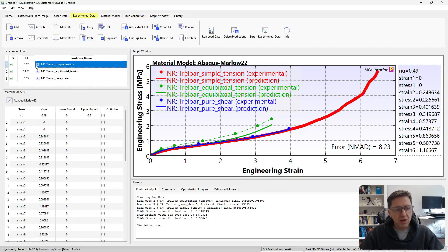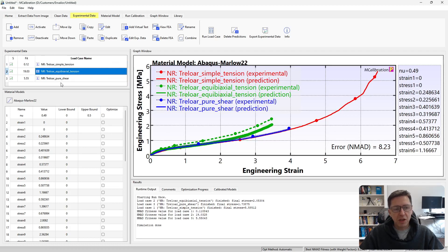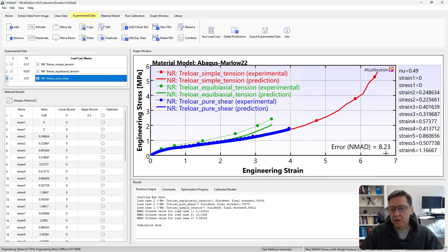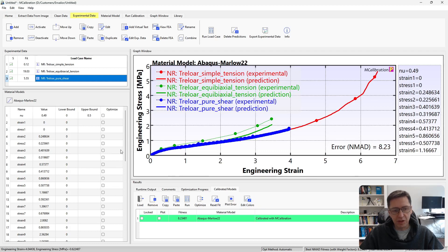You see that the uniaxial tension test has basically zero error. Of course, that's how the model was fit, but we do have a much higher error values for the other loading modes. Overall, the error was 8.23%. So it's not a bad model. It's a pretty decent fit, of course, and it was easy to use.